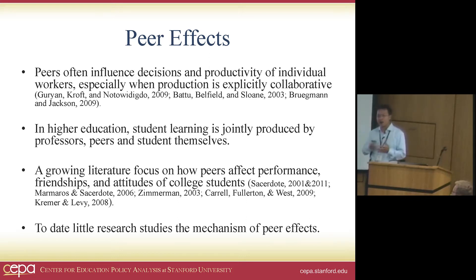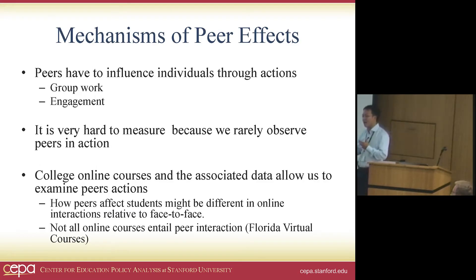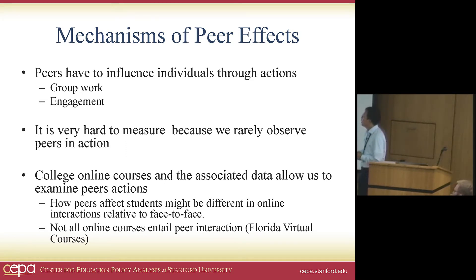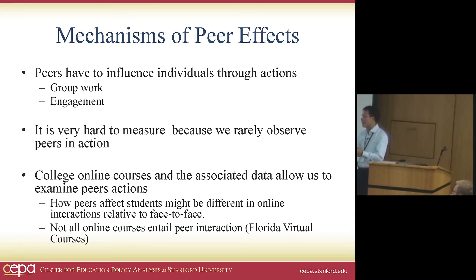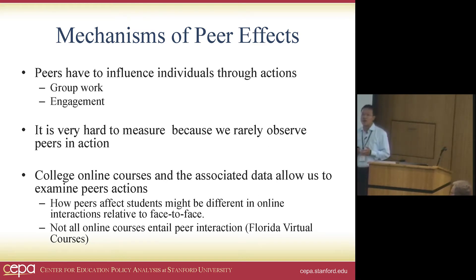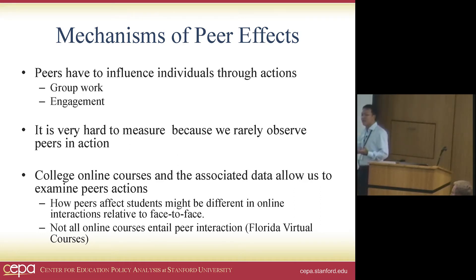Peers can work through multiple mechanisms. Here I'm going to give you two examples. First, it can be group work — we work together, inspire each other's ideas, and give each other really good feedback. Another mechanism can be engagement: because I talk with you and really enjoy it, I'm more likely to stay in the classroom and participate in discussion. However, it is very hard to measure the mechanisms of peer effects because we rarely observe peers in action. The booming of college online courses and their associated data actually allow us, for the first time, to examine these questions.